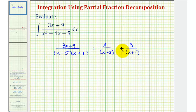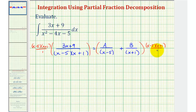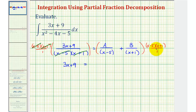And now we're going to clear the fractions from this equation by multiplying both sides by the LCD, which would be the quantity x minus five times the quantity x plus one. Notice on the left side, x minus five over x minus five simplifies to one, and so does x plus one over x plus one, leaving us with three x plus nine equals.